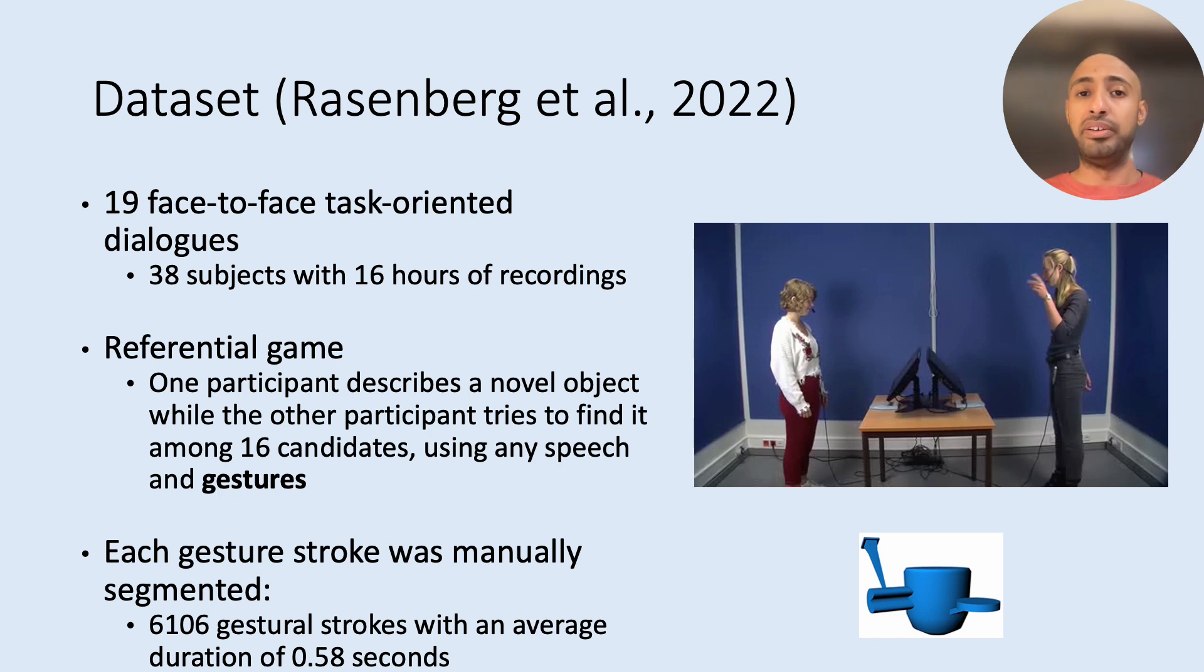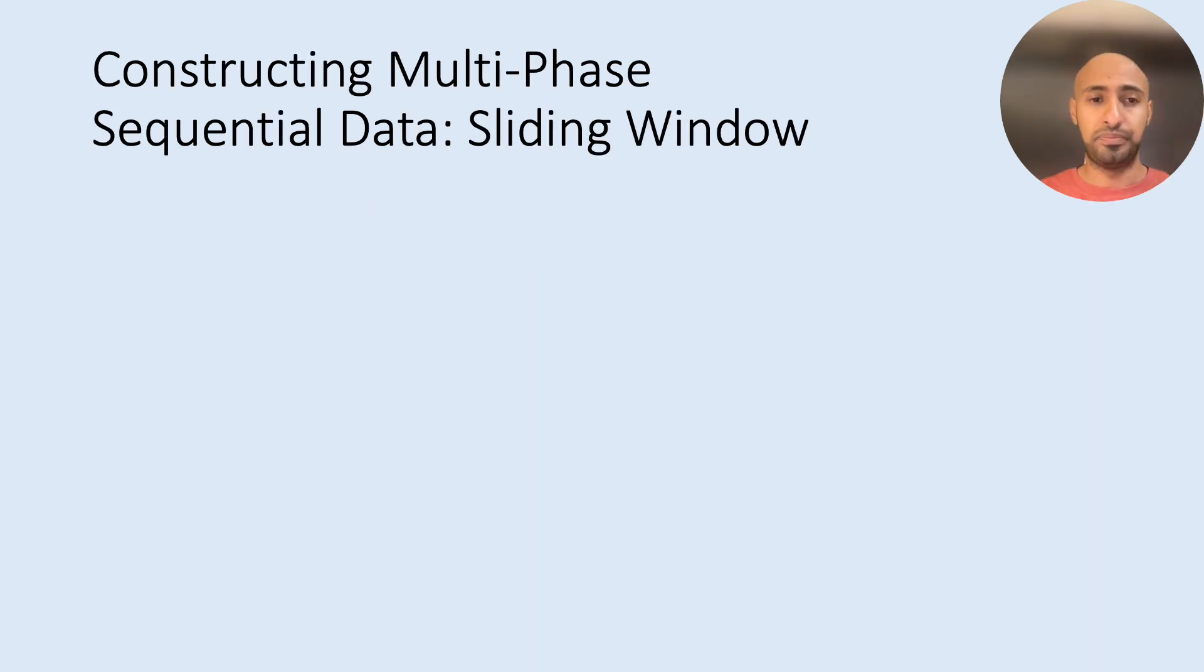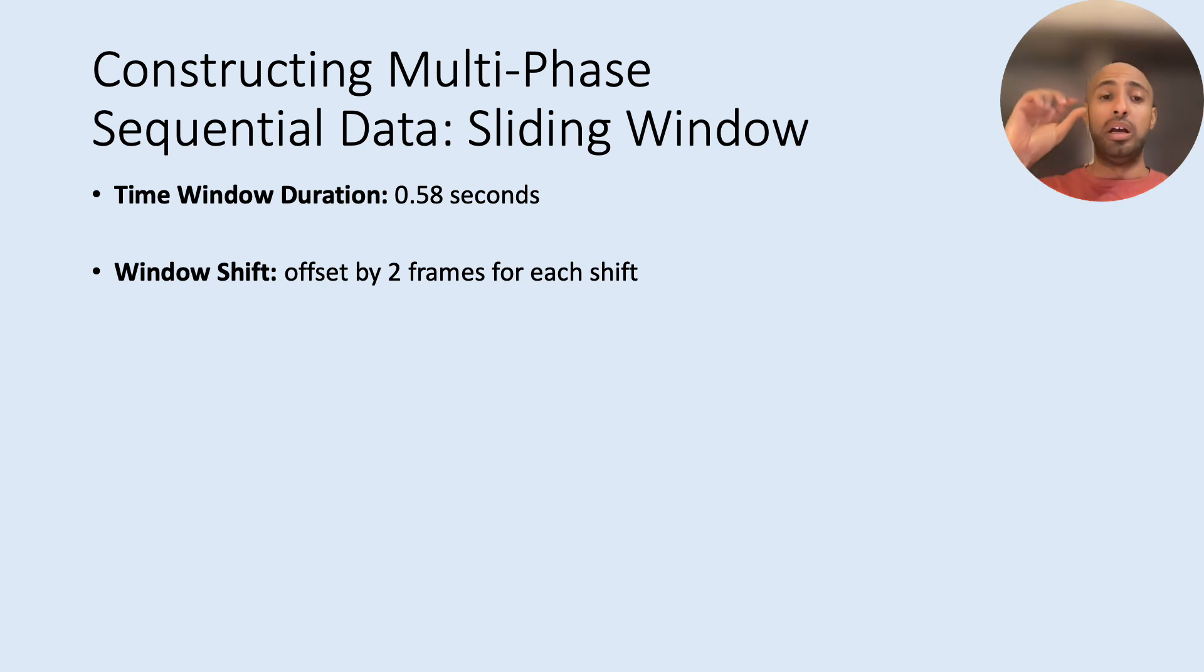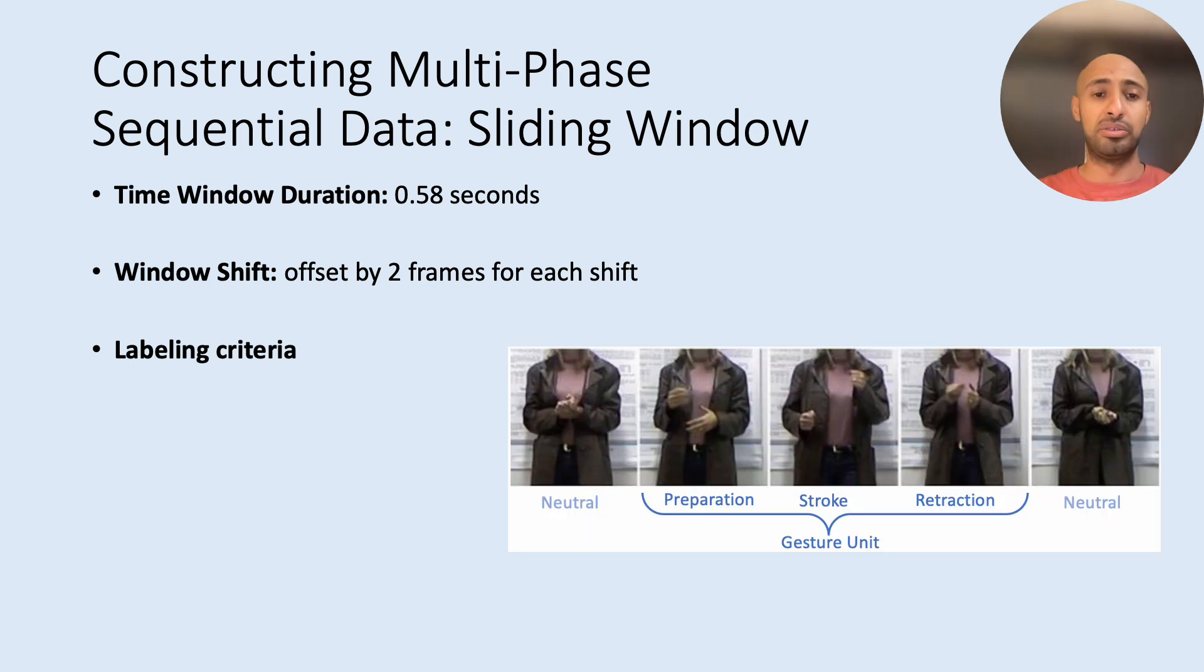And to address the limitation in the current literature and to propose a sequential approach for gesture detection, we first constructed multi-phase sequential data using a sliding window approach. So each window has a duration of 580 milliseconds, which is the average duration of a gesture. And we moved this sliding window by two frames.